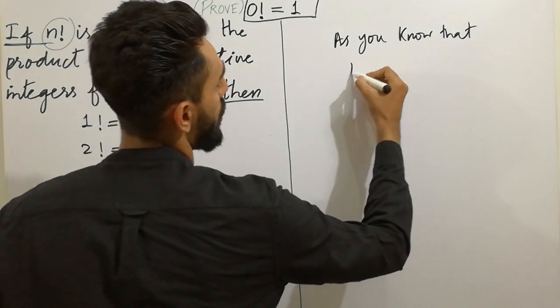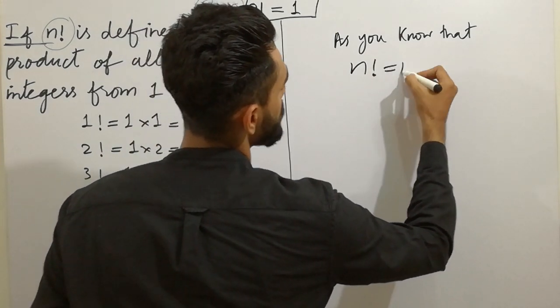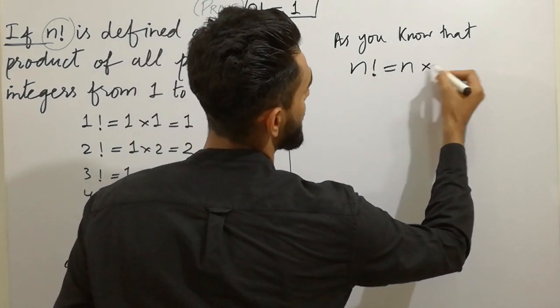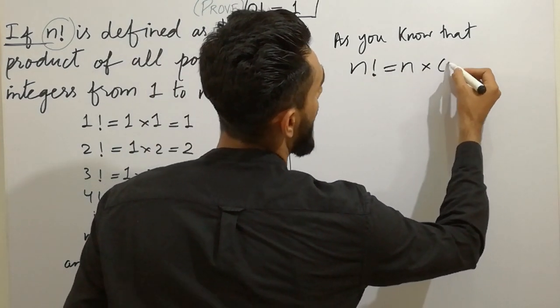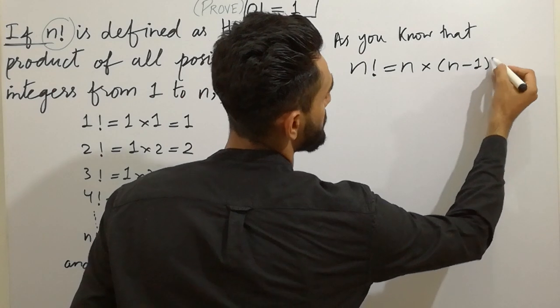As you know that n-factorial is equal to n multiplied by (n-1)-factorial.